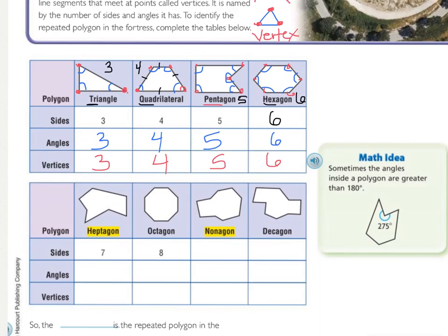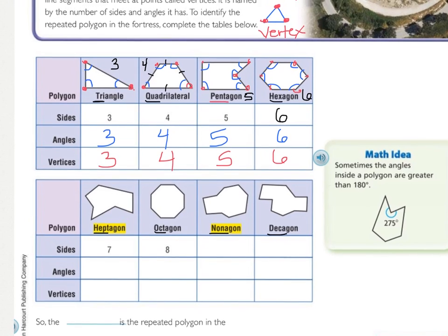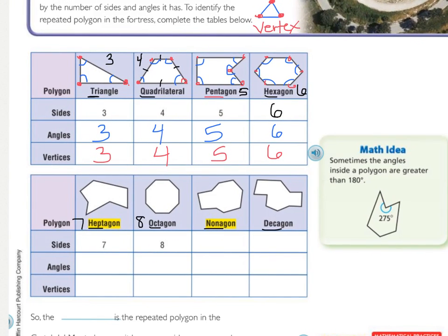We can see right here with the math idea that sometimes the angles inside the polygon are greater than 180 degrees, like on this pentagon. Press pause and fill in the rest of this table. 'Hept' means seven, 'oct' means eight, 'nona' means nine, and 'deca' means ten. This is how the rest of your table should look.